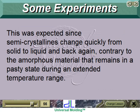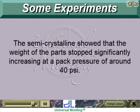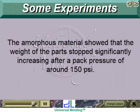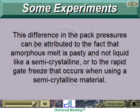This was expected, since semicrystallines change quickly from solid to liquid and back again, contrary to amorphous material that remains in a pasty state during an extended temperature range. Experiment 2: With the same mold, injection machine, and auxiliary equipment, the effect of pack pressure on the weight of parts was tested using two materials — an amorphous (polystyrene) and a semicrystalline (nylon). The semicrystalline showed that the weight of the parts stopped significantly increasing at a pack pressure of around 40 psi. This difference in pack pressures can be attributed to the fact that amorphous melt is pasty and not liquid like a semicrystalline, or to the rapid gate freeze that occurs when using a semicrystalline material.